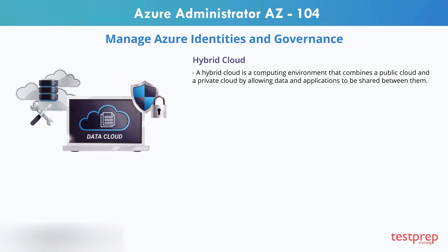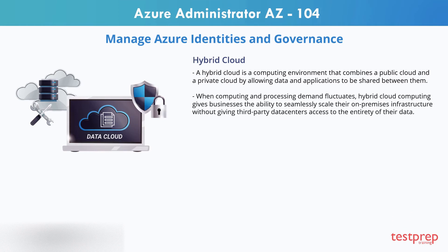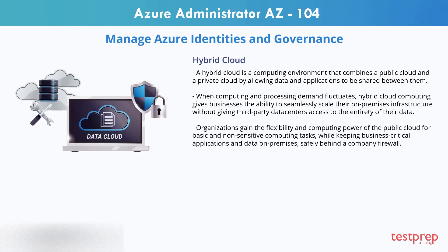A hybrid cloud is a computing environment that combines a public cloud and a private cloud by allowing data and applications to be shared between them. When computing and processing demand fluctuates, hybrid cloud computing gives businesses the ability to seamlessly scale their on-premises infrastructure up to the public cloud to handle any overflow, without giving third-party data centers access to the entirety of their data. Organizations gain the flexibility and computing power of the public cloud for basic and non-sensitive computing tasks, while keeping business-critical applications and on-premises data safely behind a company firewall.